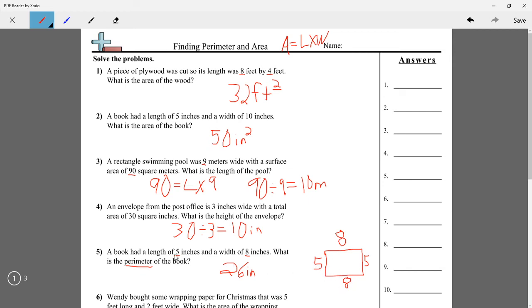So basically, the perimeter of a rectangle, you can just add the length and width together. 5 plus 8 equals 13. And then you can just double it. 13 times 2 also equals 26.